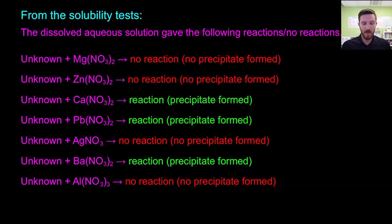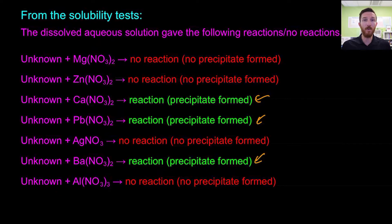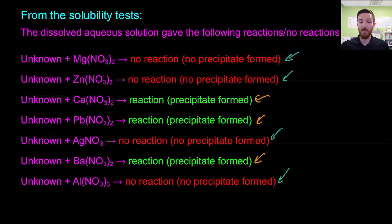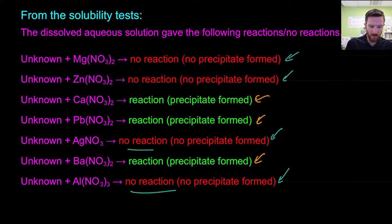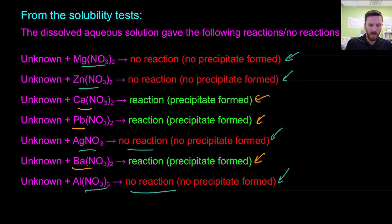Up at the lab, we looked at some possible precipitation reactions between our unknown substance and a bunch of ions. We can see the results: we saw three products being formed where a precipitate was produced. We added magnesium ions, zinc ions, silver ions, and aluminum ions, and we saw no reaction for each of those. Then we added calcium ions, lead ions, and barium ions, and we saw formation of a precipitate from these.